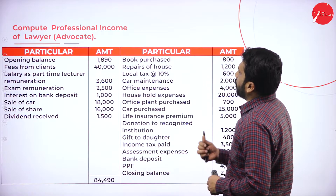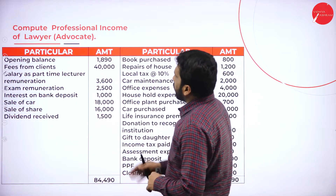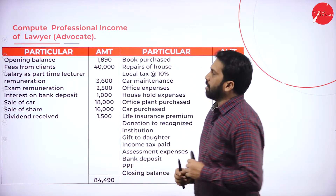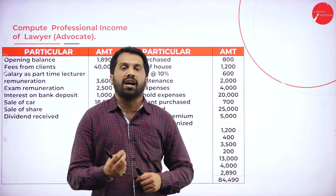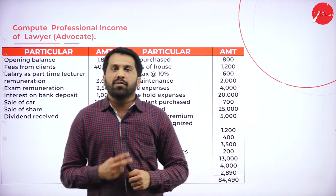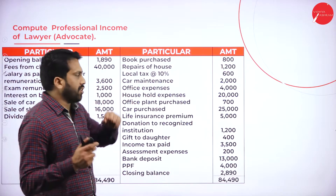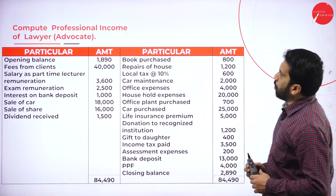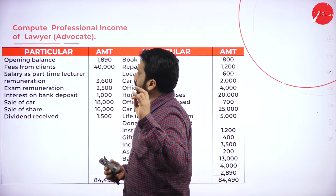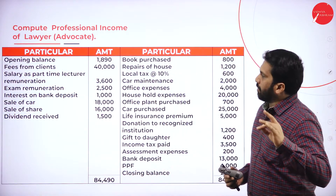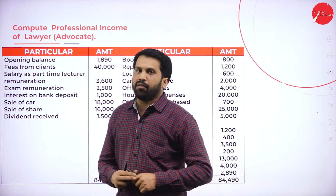Compute professional income of lawyer or advocate. These are the particulars we have. We have to find out which are your professional income and which are your professional expenditure. We will concentrate only on professional income and professional expenditure. Items include: fees from client, salary as part-time lecturer, remuneration, exam remuneration, interest on bank deposit, sale of car, sale of share, and dividend received.